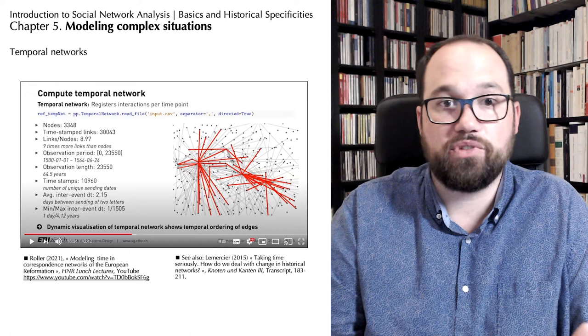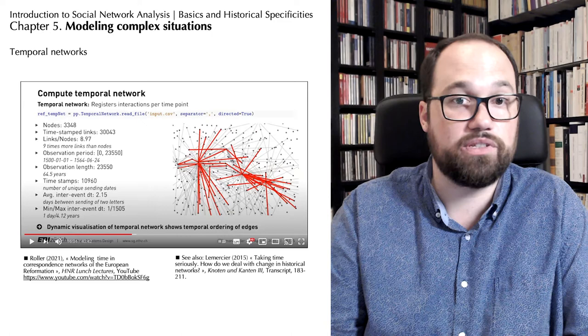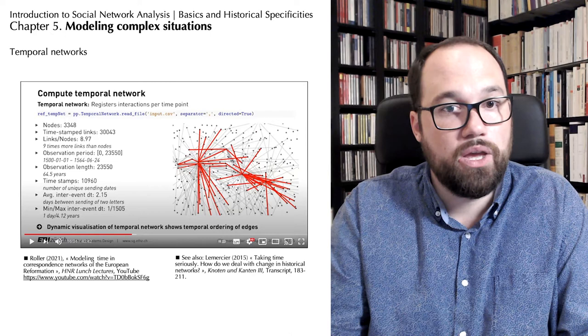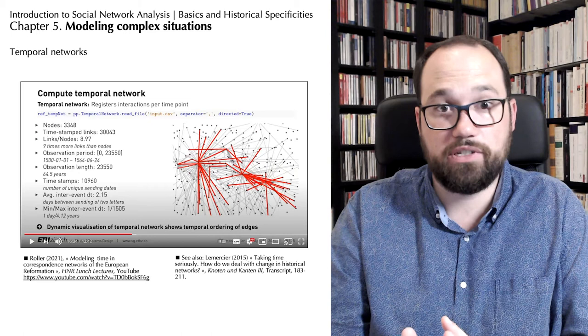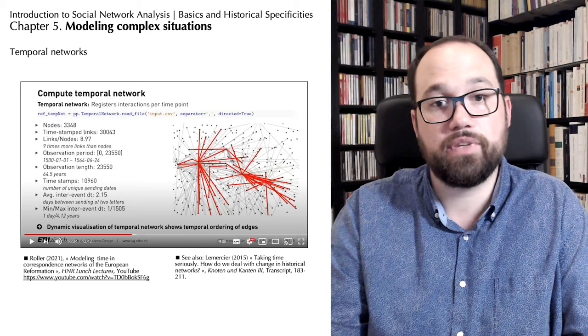It is obviously more complicated when we are talking about interpersonal social networks that are not based on historical sources, that can be formalized, but solutions can be found. When does a friendship begin and end, for example? Good question. But technically, the implementation of these good ideas is really a problem. We lack the tools, and probably the creativity, to invent solutions that allow us to explore temporal networks efficiently.